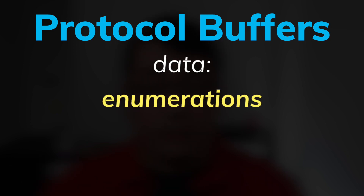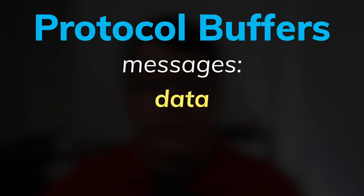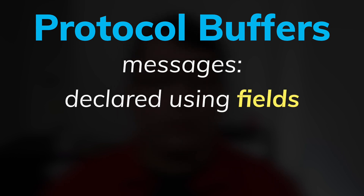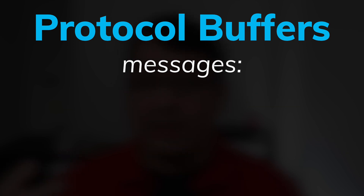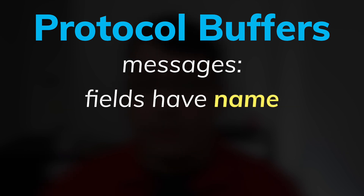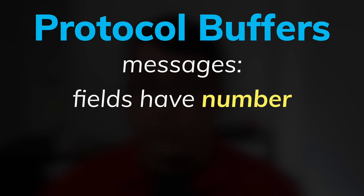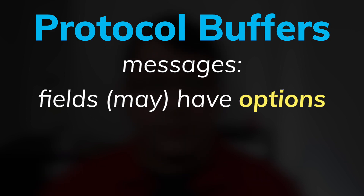The data section will be things like messages and enumerations. Messages represent data — the actual content of the payload — and their content is declared using fields. Those fields have a type, a name, a number, and in some cases extra options.